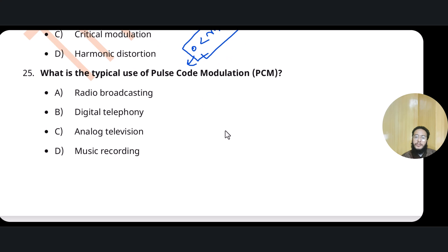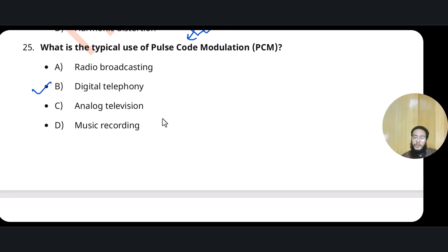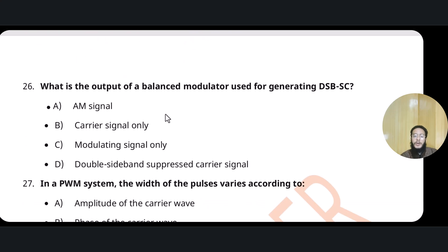Which type uses pulse code modulation? As mentioned earlier, PCM is used in digital communication, specifically digital telephone systems. A continuous value is converted to a discrete value through sampling, then converted to binary (0s and 1s).